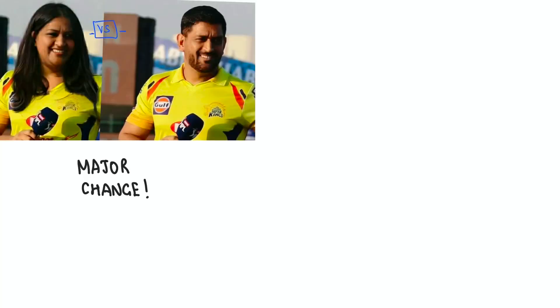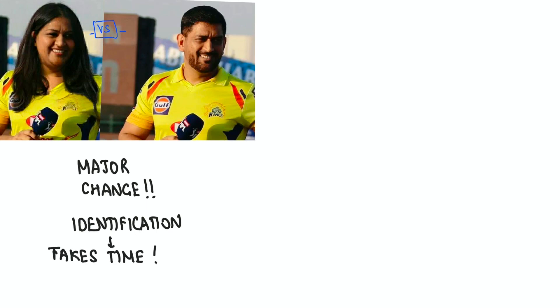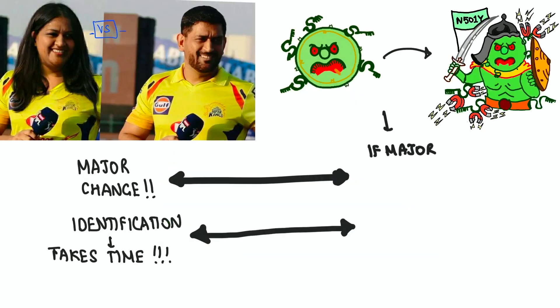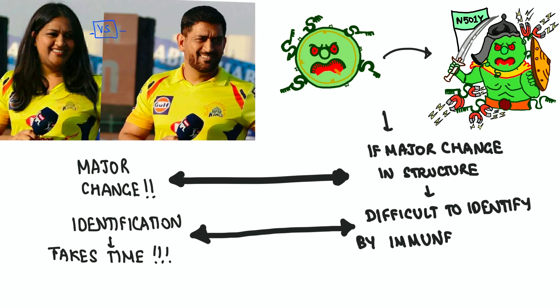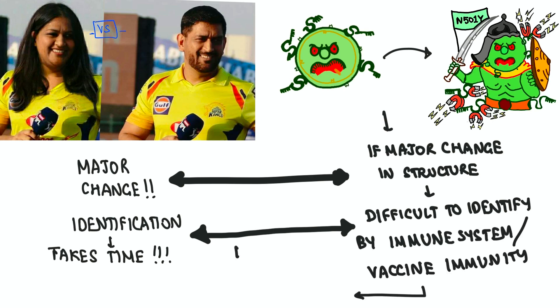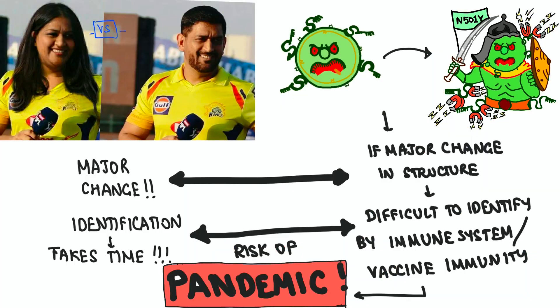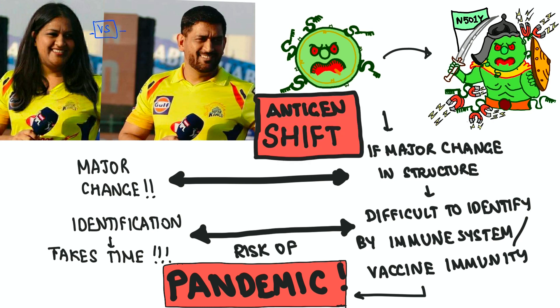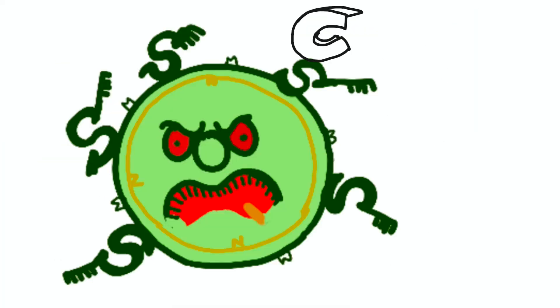Now try identifying this — it's the same captain, edited in FaceApp, but now with a major change. Your time to identify him also took longer. Same thing with COVID: if a major change happens in its appearance and structure, it becomes very difficult to identify for the immune system or even vaccine-generated immunity. This creates a risk for pandemic. This is antigen shift — a deadly mechanism.